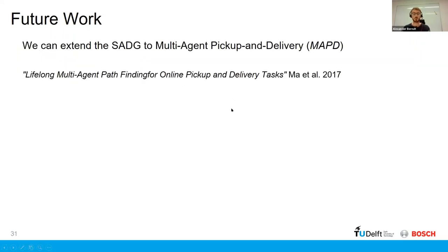And then for future work, which is something I'd love to discuss more maybe today in the questions, is how can we extend this concept of switchable action-dependency graphs to more persistent planning problems such as the multi-agent pickup and delivery problem, which was introduced by Ma et al. in 2017, and there's been quite a lot of work on that in the literature recently.